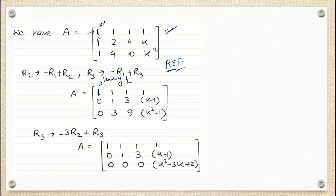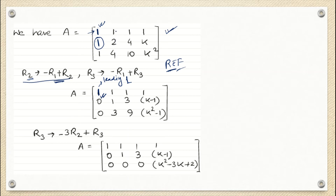My focus is on the element below the leading 1, which should be 0, but I see it is 1. I have to convert this 1 into 0 using an elementary row operation. The operation is R2 → R2 minus R1. So: 1 minus 1 = 0, 2 minus 1 = 1, 4 minus 1 = 3, and K minus 1 = K minus 1. We don't know the value of K — that is what we have to find. So the new row 2 becomes [0, 1, 3, K−1].